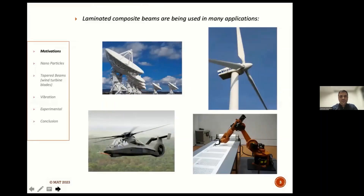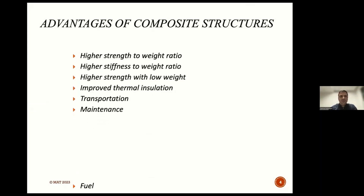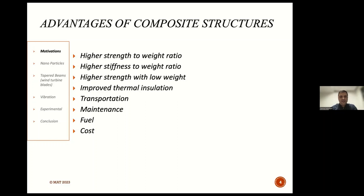As you know, composite structures are being used in many engineering applications such as wind turbine blades, helicopter blades, arms of robots, satellites, and many other applications. The advantages of composite structures include higher strength and higher stiffness-to-weight ratio compared to other materials such as metallic counterparts.